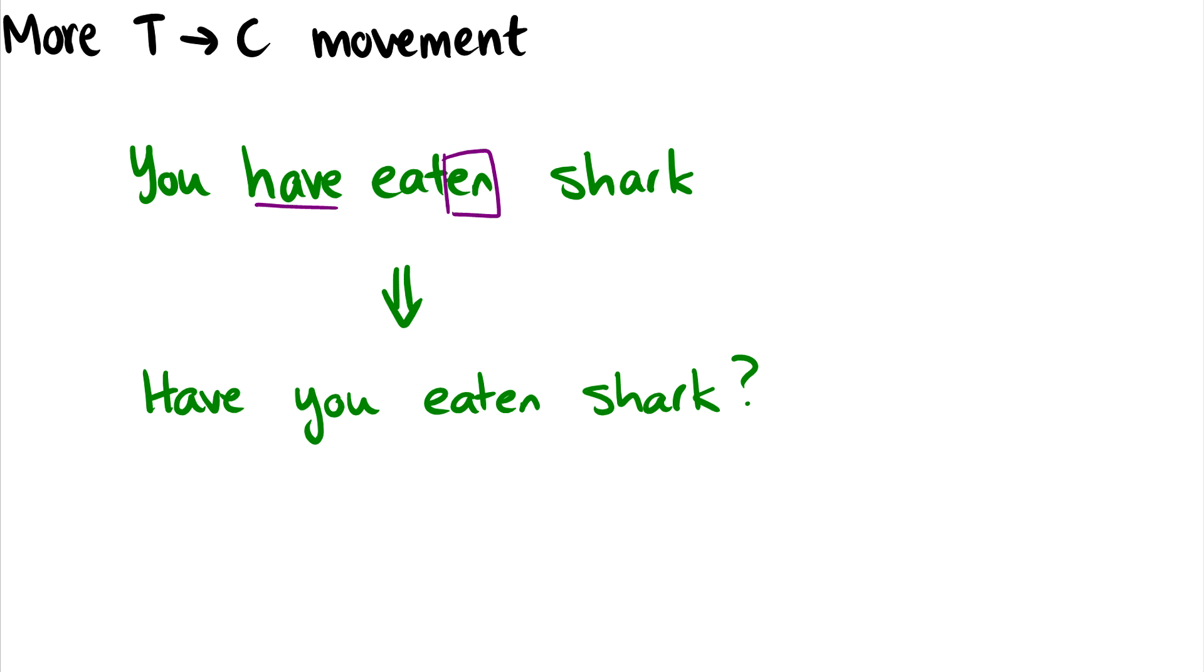And when we do subject-auxiliary inversion, or just T to C movement, which we can call it now, we still notice that the EN is on the main verb. And this suggests that, yeah, really, 'have' does originate where we've said it does in the perfect phrase, and that there is movement. Because otherwise, we'd say, well, how did this perfect get its morphology all the way down on 'eaten' when there's another NP or DP in the way? So 'you have eaten shark' can become 'have you eaten shark?'